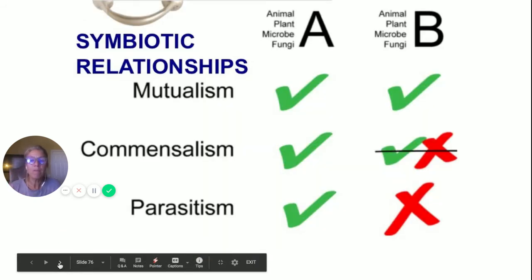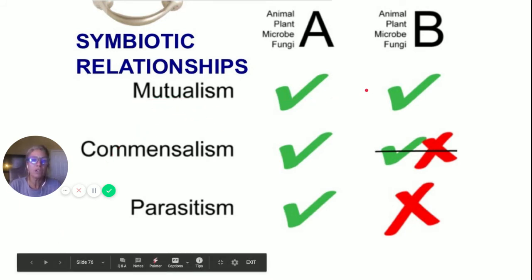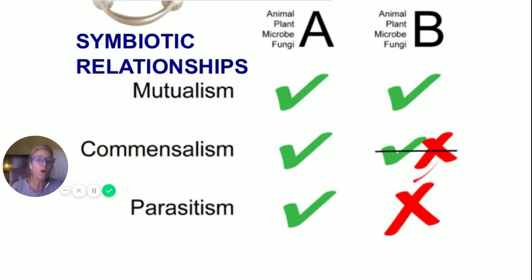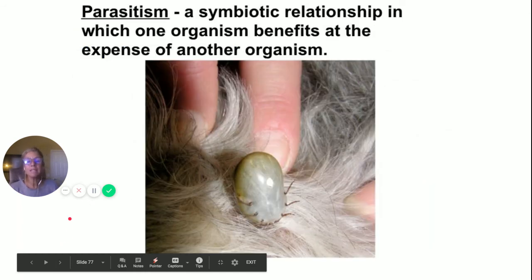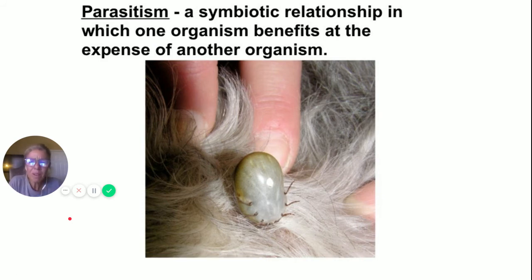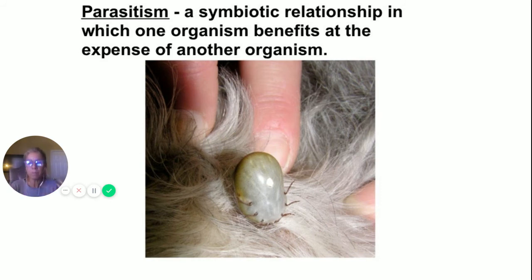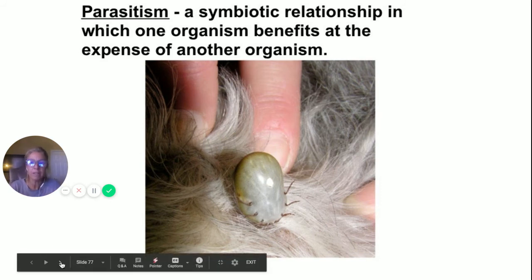In mutualism, it's good for both species. Parasitism is the other extreme — good for one, bad for the other. Commensalism: good for one, neither hurts nor helps the other. Here's a tick on a dog or person — it's good for the tick but bad for the host because the parasite is sucking their blood. In math terms: parasitism is plus/minus. Example: tick and dog.